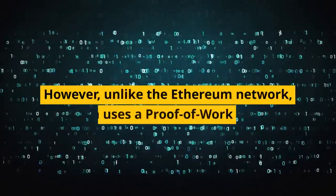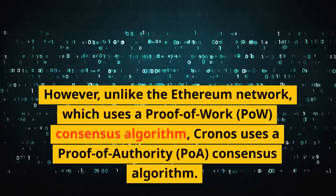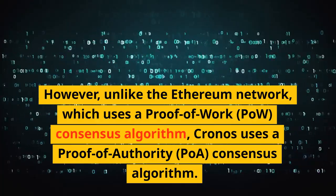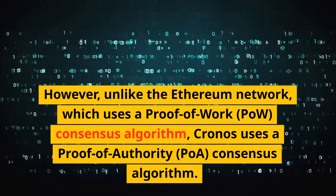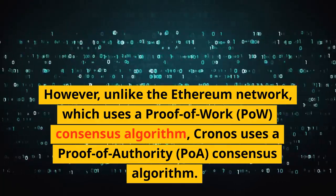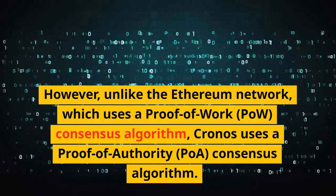However, unlike the Ethereum network, which uses a proof-of-work (POW) consensus algorithm, Kronos uses a proof-of-authority (POA) consensus algorithm.